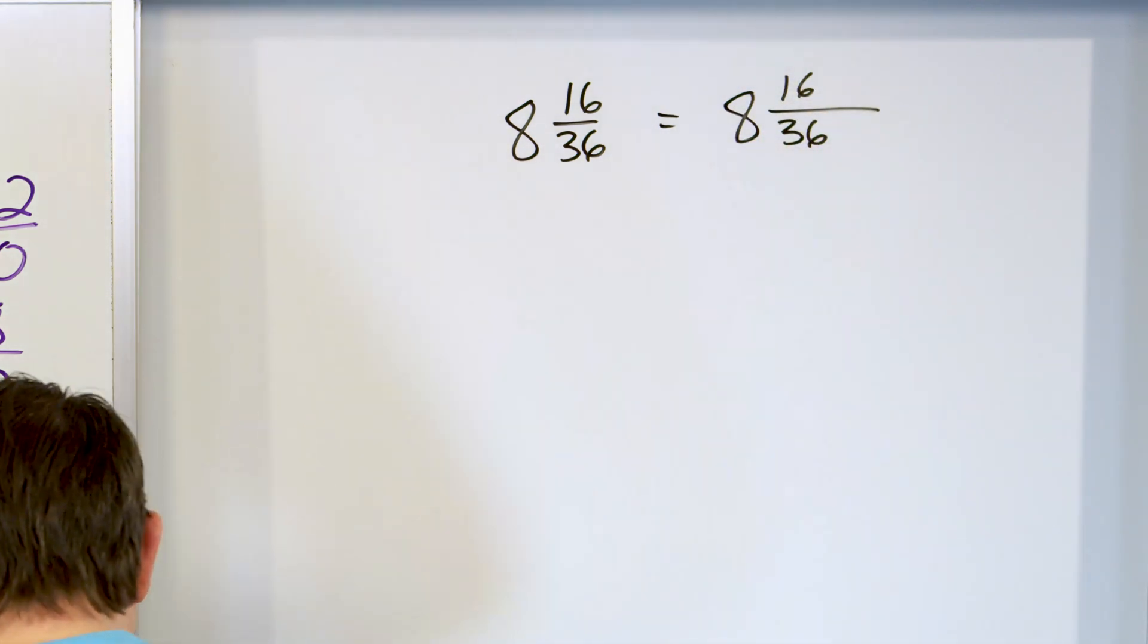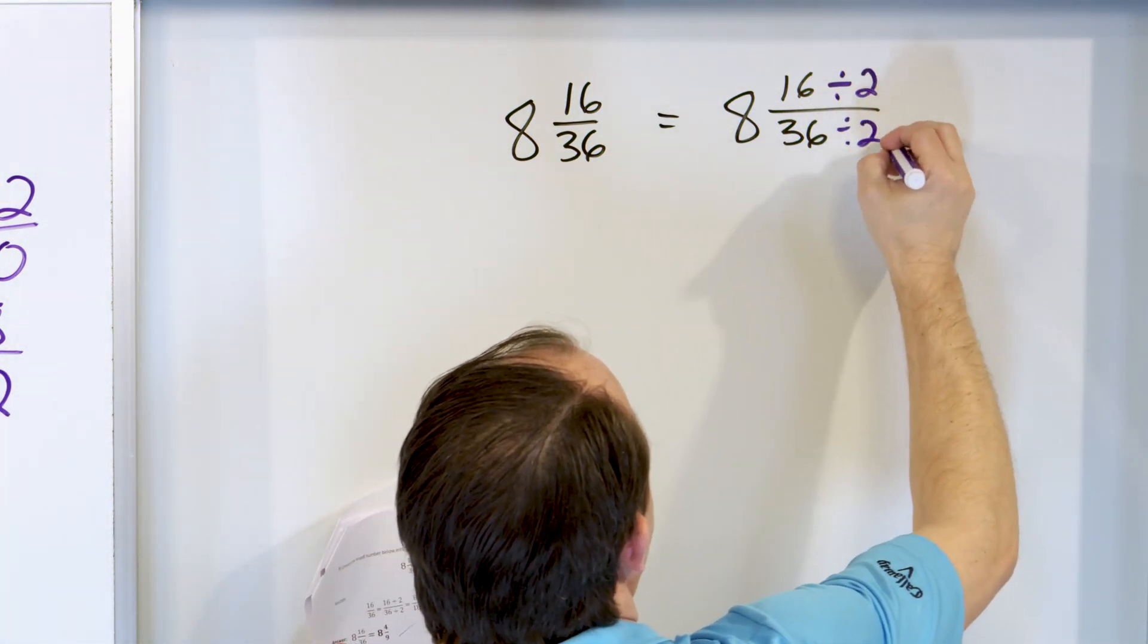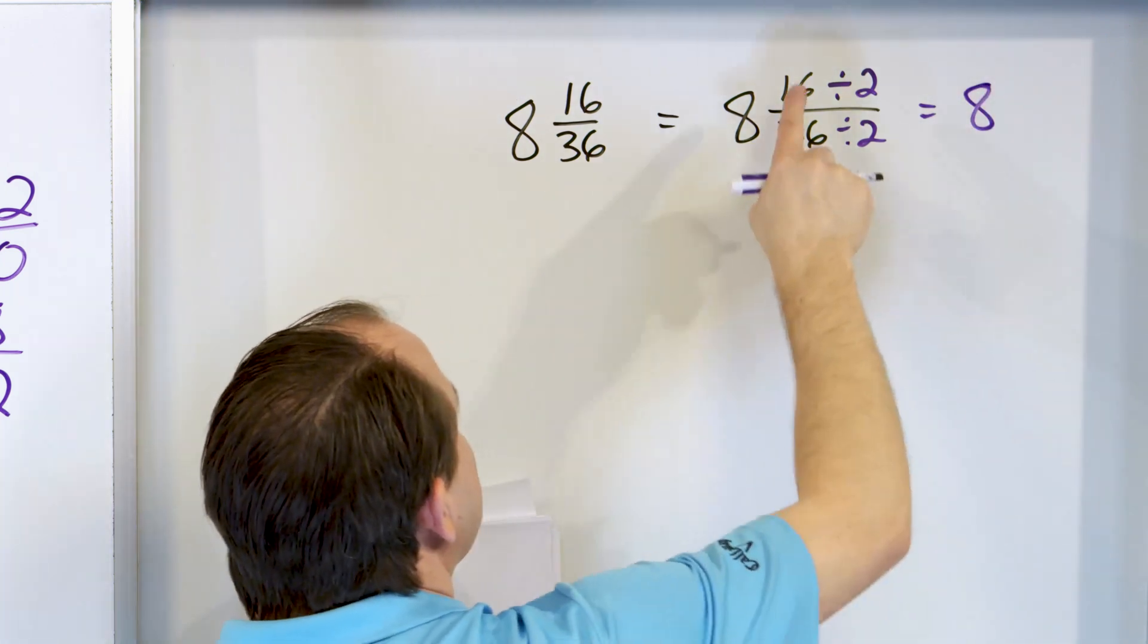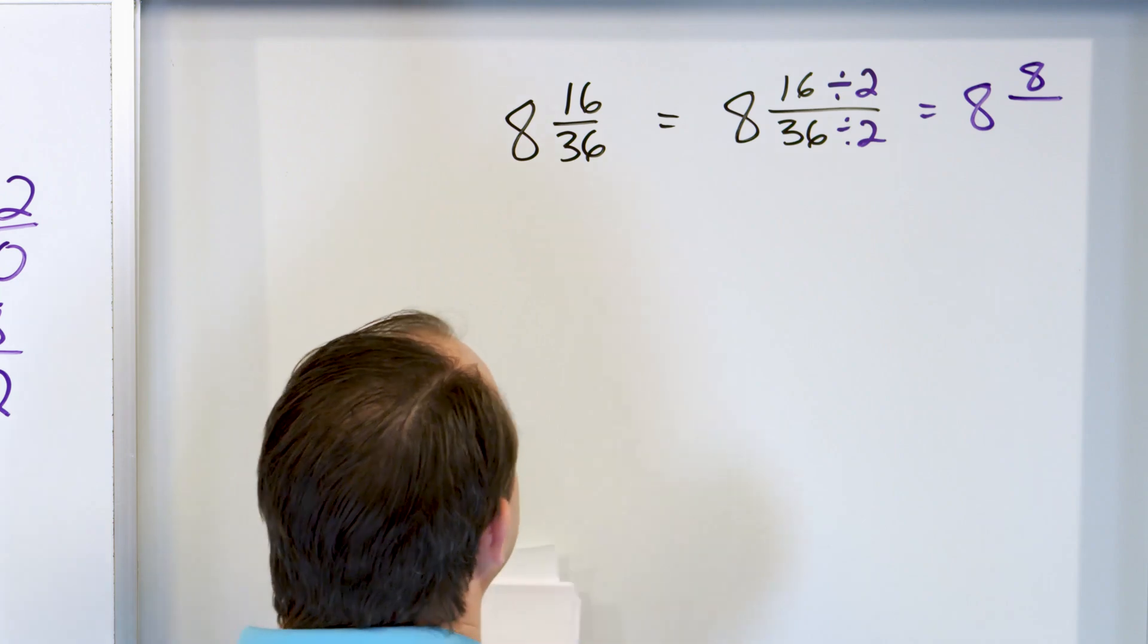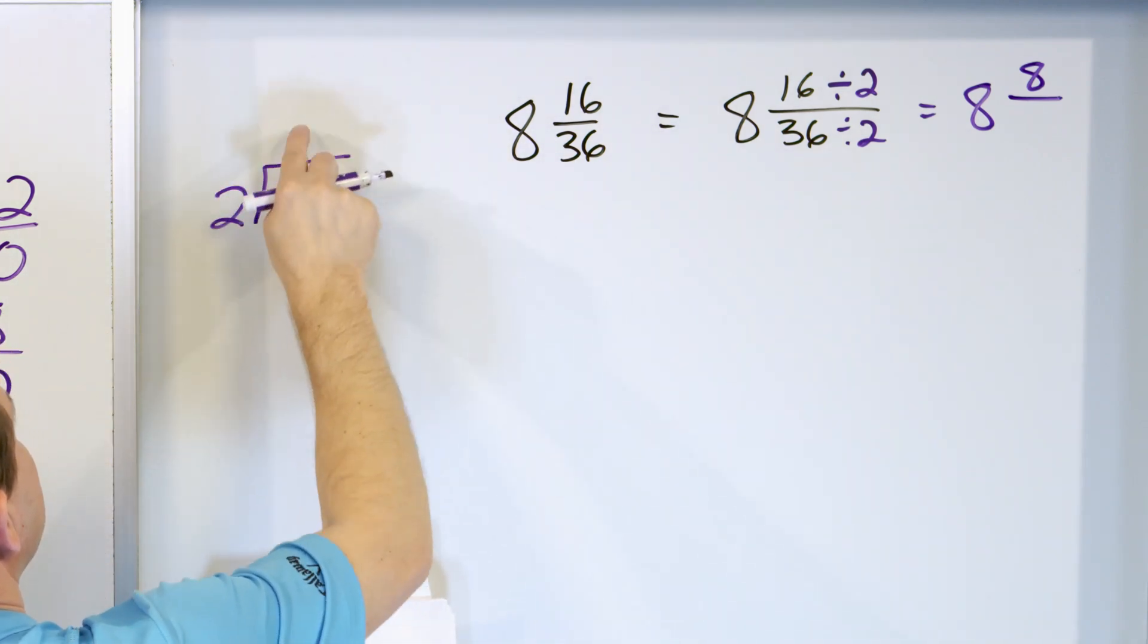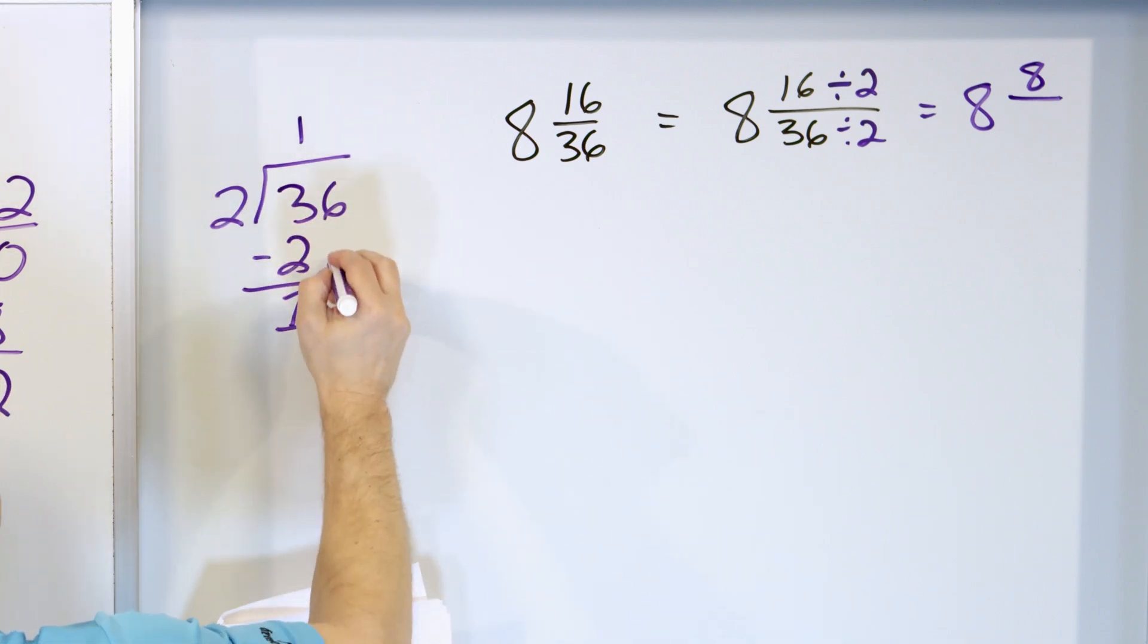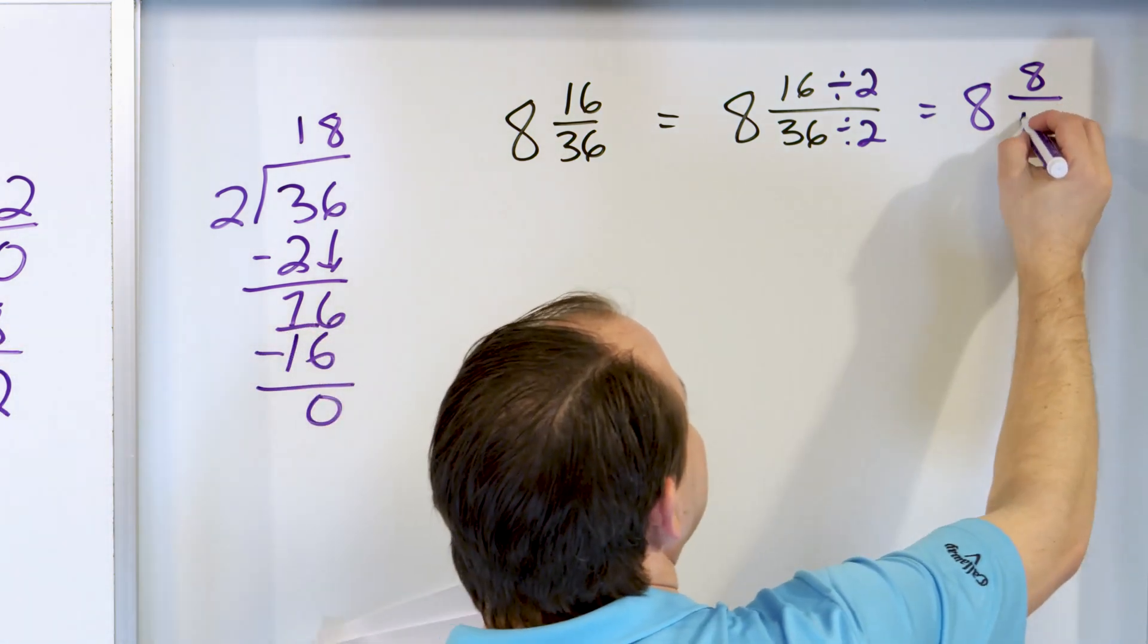So I'm going to divide by 2. Divide by 2 in the top, 2 in the bottom. What do I get? 8 and 16 divided by 2 is 8, and 36 divided by 2, I'm not sure about that. So let's go over here. 36 divided by 2. 2 times 1 is 2, subtract, get a 1. Drag the 6 down. 2 times what is 16? 2 times 8 is 16. Subtract, remainder 0. So 36 divided by 2 is 18.